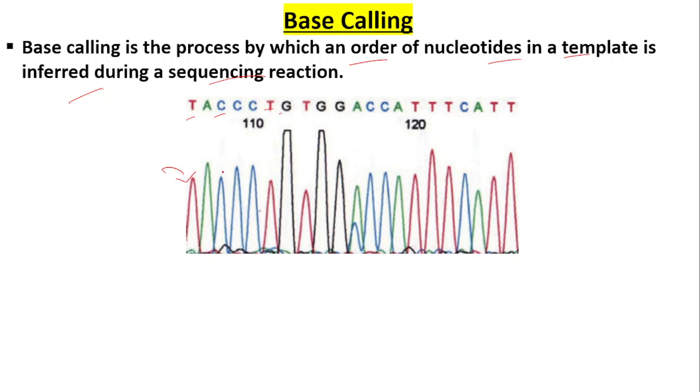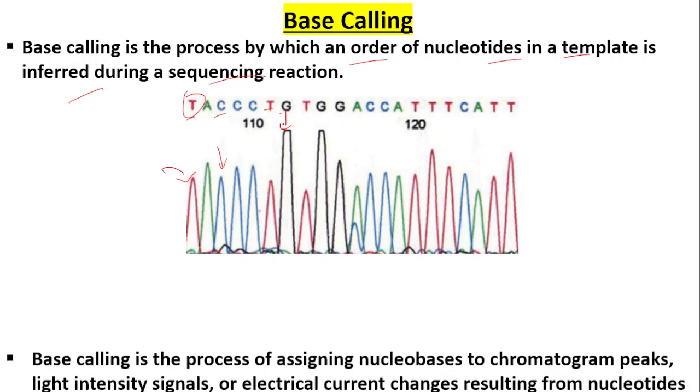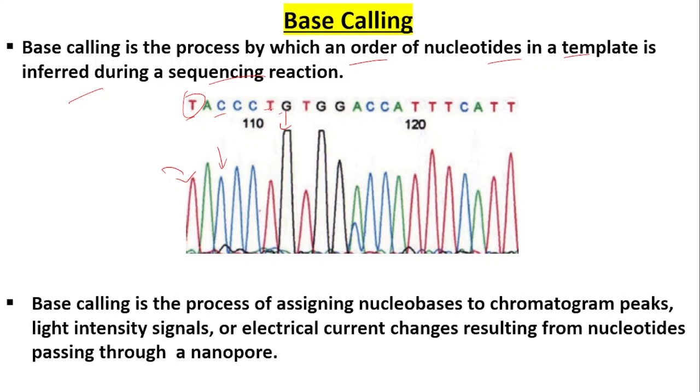So then what is base calling? Base calling is the process of assigning nucleotide bases to chromatogram peaks. These are chromatogram peaks, light intensity signals, or electrical current changes.